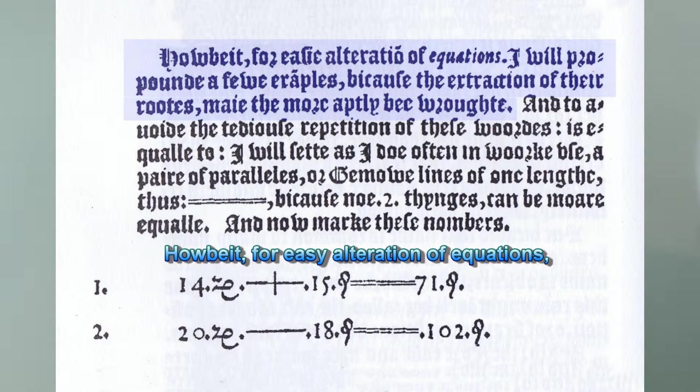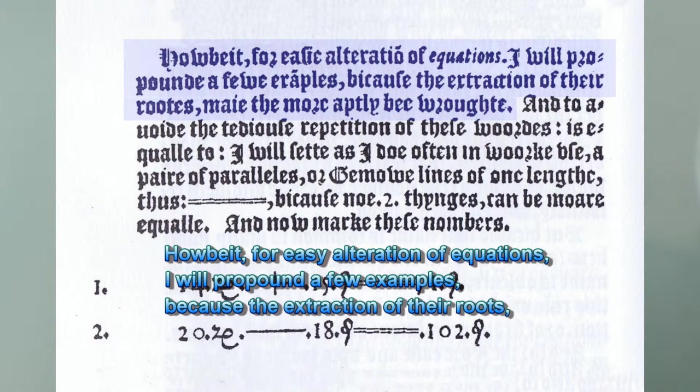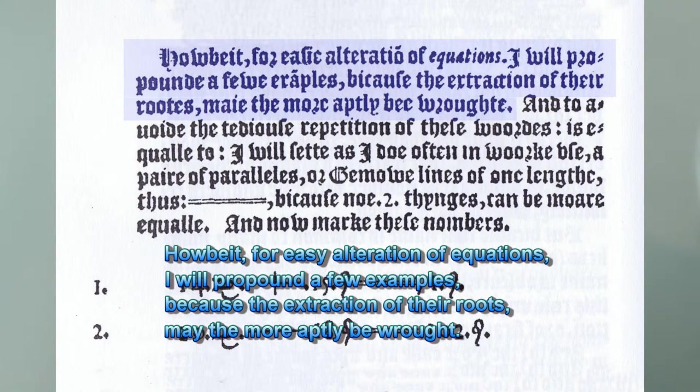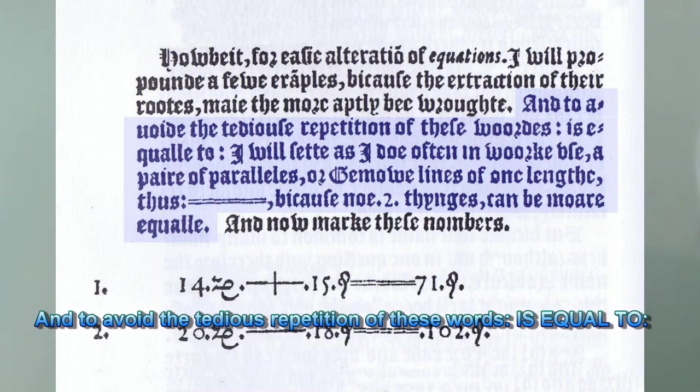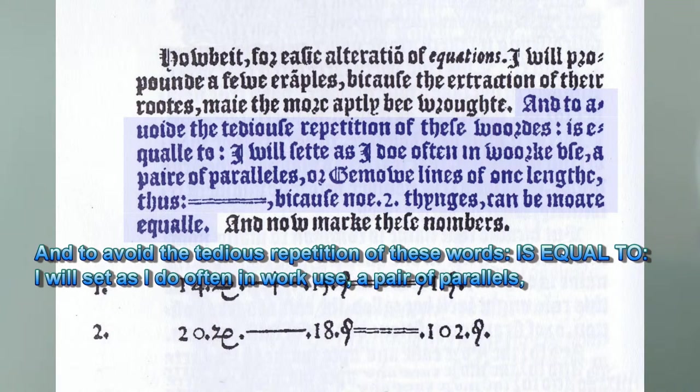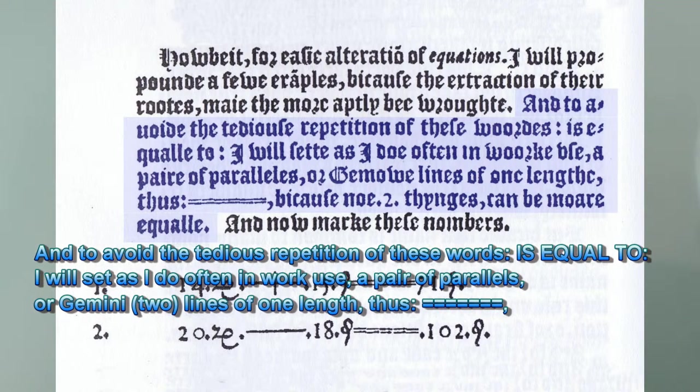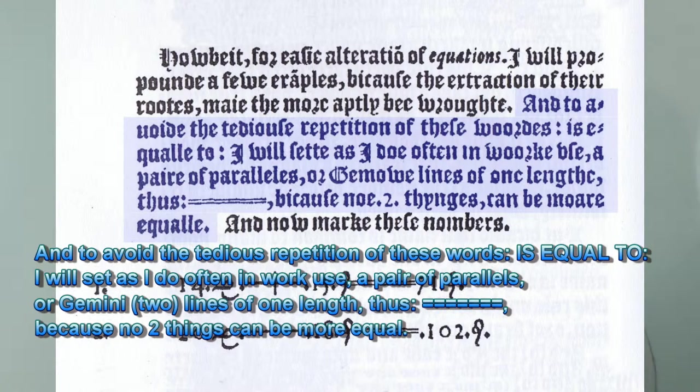He says, Howbeit, for easy alteration of equations, I will propound a few examples, because the extraction of their roots may the more aptly be wrought. And to avoid the tedious repetition of these words, is equal to, I will set as I do often in work, a pair of parallels, or gemmo lines of one length, thus, because no two things can be more equal.